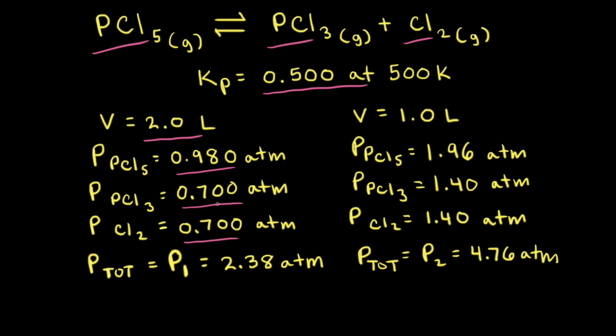If we add up those three partial pressures, we get the total pressure of the gas mixture at equilibrium, which is equal to 2.38 atmospheres. We'll call this total pressure P1.